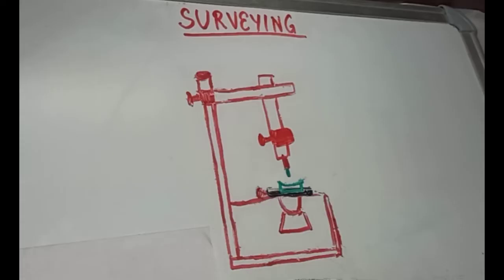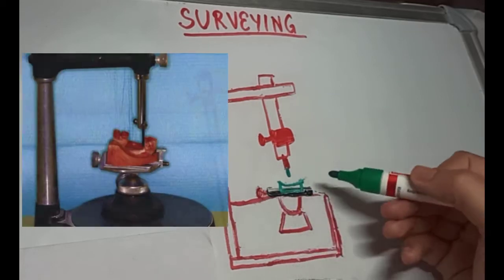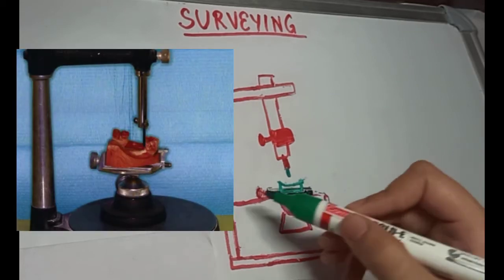Now let's see how to survey the cast. The base of the cast should be flat and it is placed on the surveying table and it is secured with the locking arm.